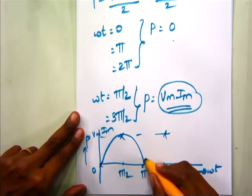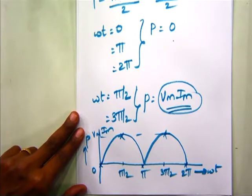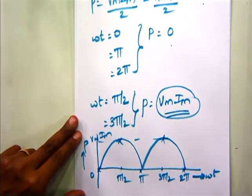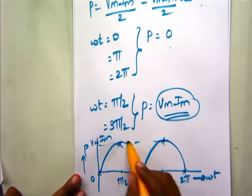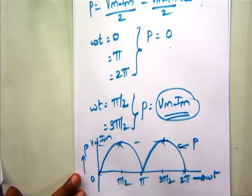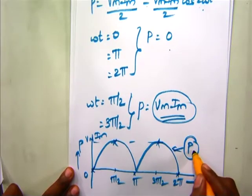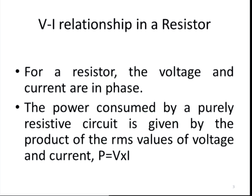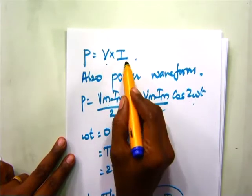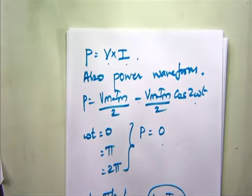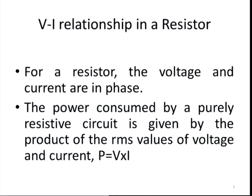The graph shows that for a purely resistive circuit, the power is always positive. The power waveform is always positive, and the total power consumed is given by the product of the RMS values of the voltage and current. This power is nothing but the total heat dissipated in the resistor.